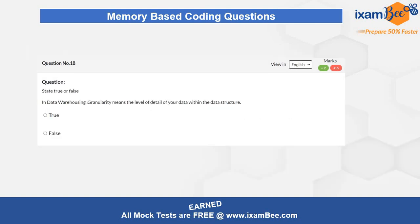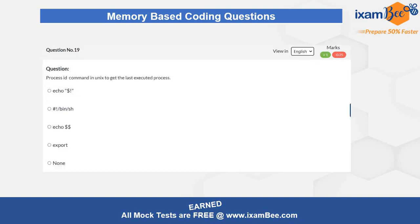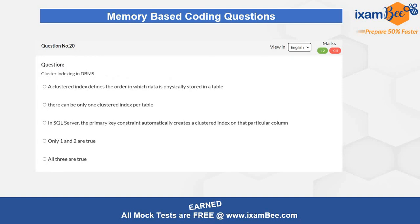The next question is related to data warehousing — you have to identify the correct data structure used in data warehousing and answer true or false for the given statement. Question 19 is about shell scripting commands — identify which command correctly retrieves the entire process ID in Unix. The final question in this video is about clustered indexing in DBMS — identify which statement is true and answer accordingly.